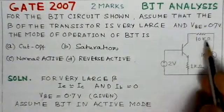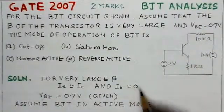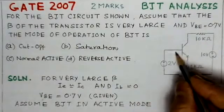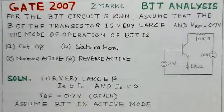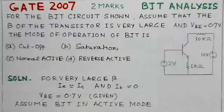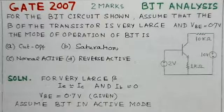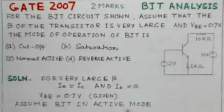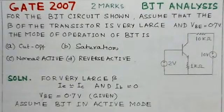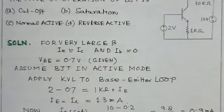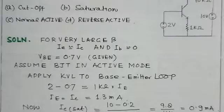It is given that VBE is 0.7 volts. We'll assume here that the BJT is in active mode. When you assume BJT to be in active mode, then we can apply KVL to this input loop.